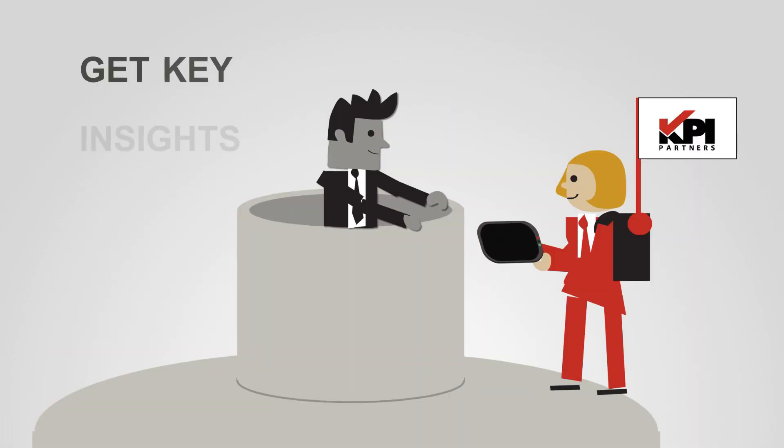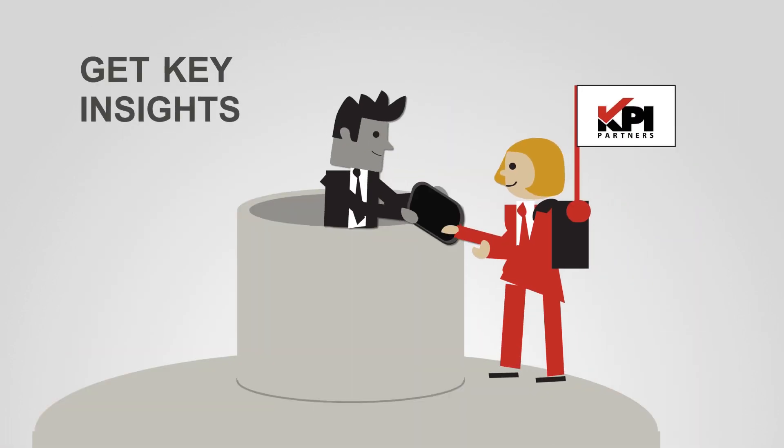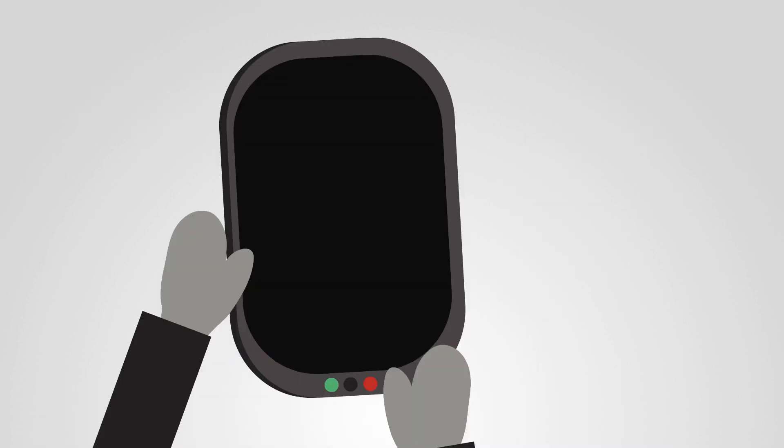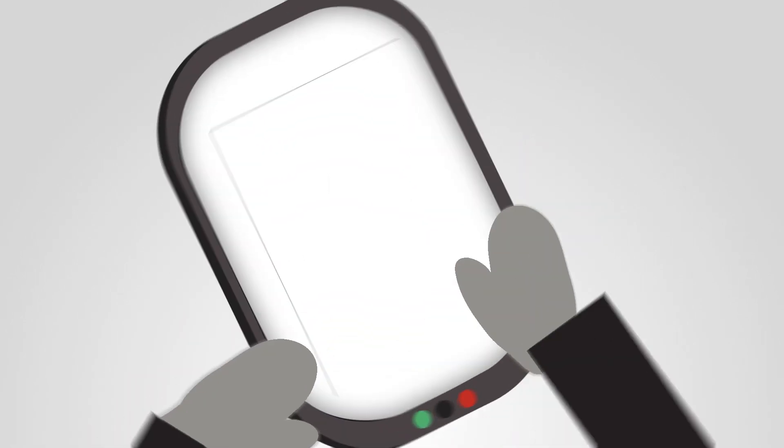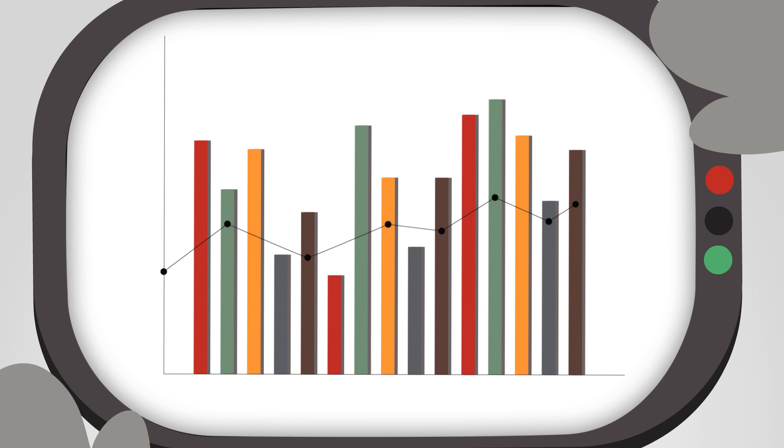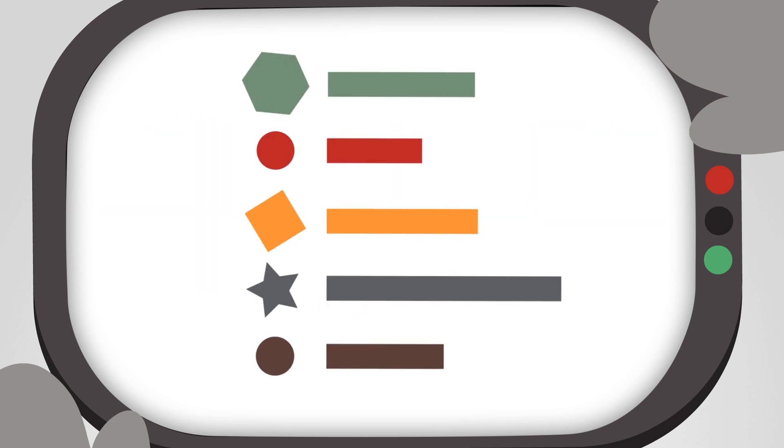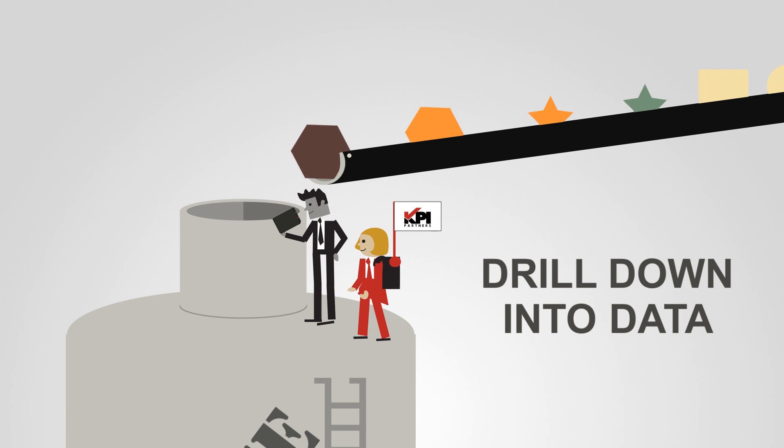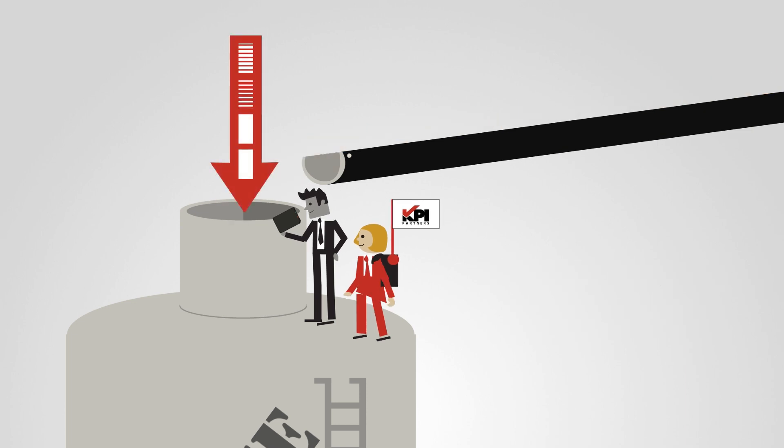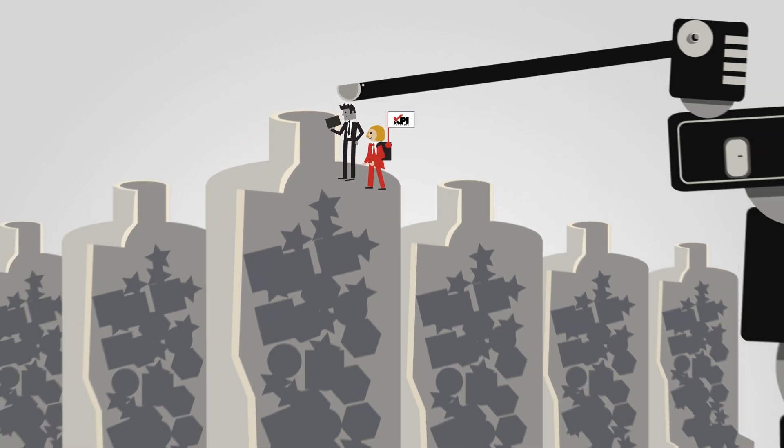A CEO can gain a tremendous amount of insight from an executive dashboard built by KPI partners. Like when he needs to know what happens to gross margin if materials costs increase by 20%, and he can drill down intuitively into the data to understand exactly how that insight was reached.